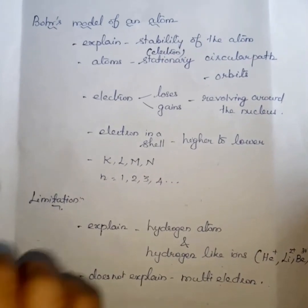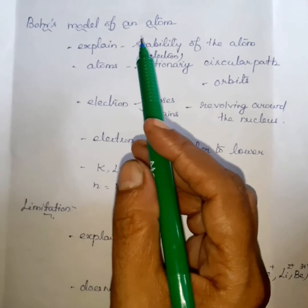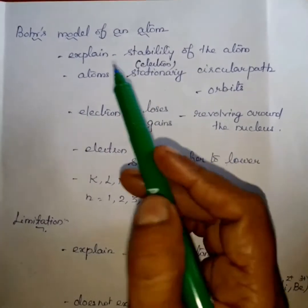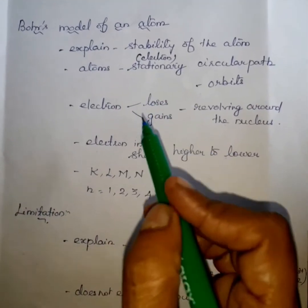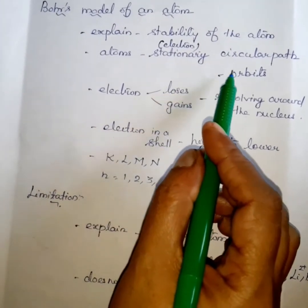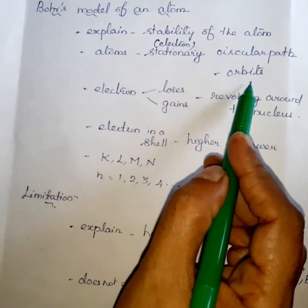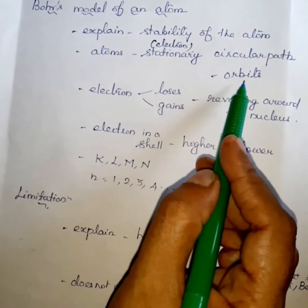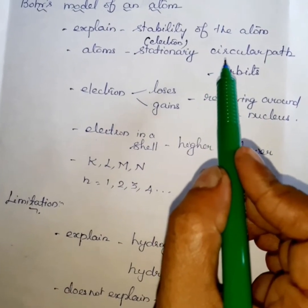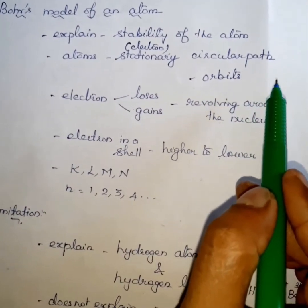Now we are going to study Bohr's model of an atom. Bohr explained the stability of the atom. The main postulates of the Bohr model: first, the electrons revolve around the nucleus in a stationary — meaning fixed — circular path. This fixed circular path is called orbit, or shell, or energy level.